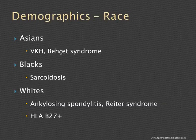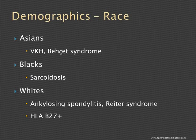Regarding race: in Asians, VKH and Behcet's disease are more common. In fact, VKH is more common in people who have dark skin because it affects the melanocytes. In Black patients, sarcoidosis is more common. In White patients, ankylosing spondylitis — actually HLA-B27 positive — is more common.